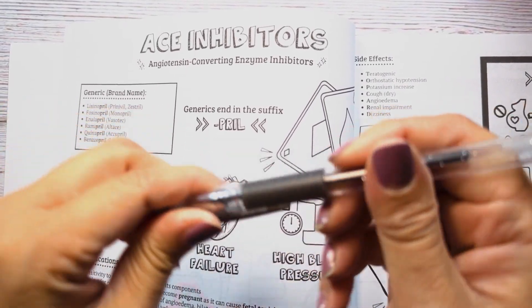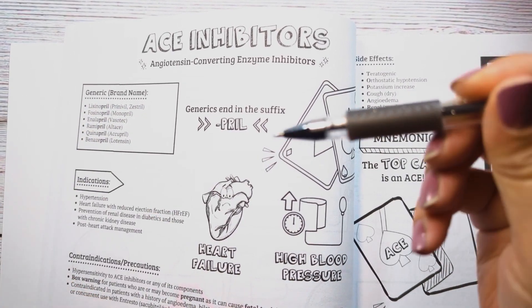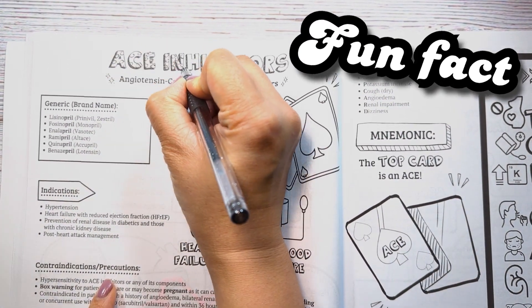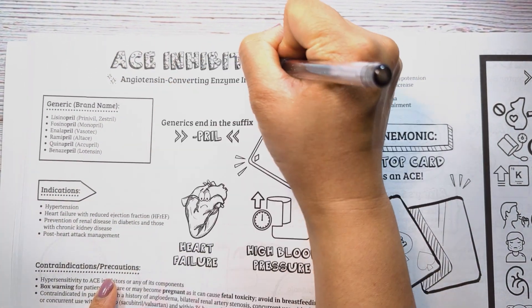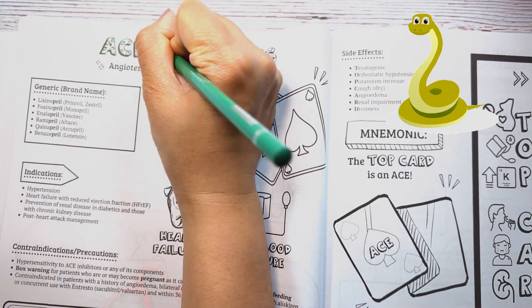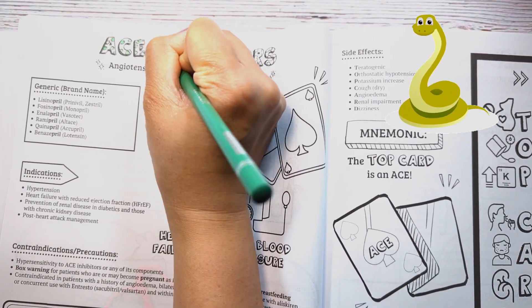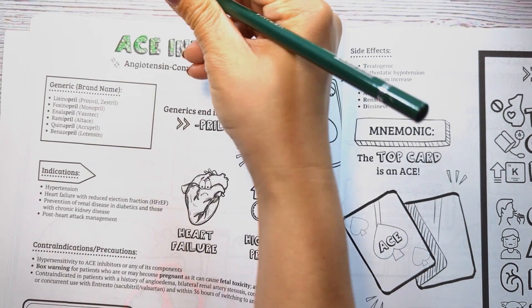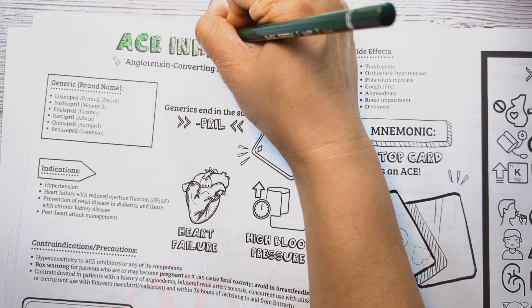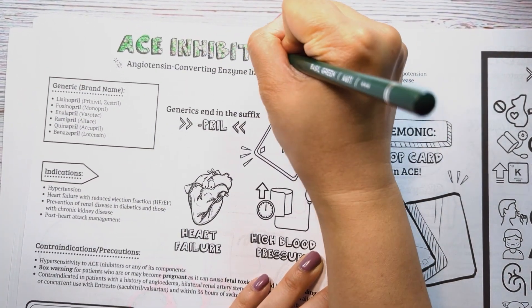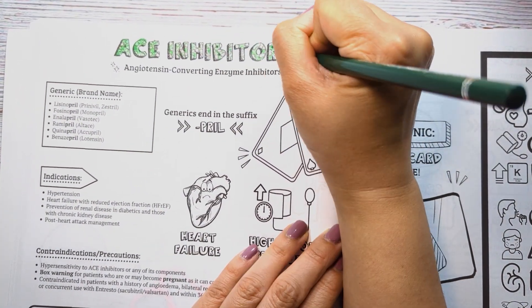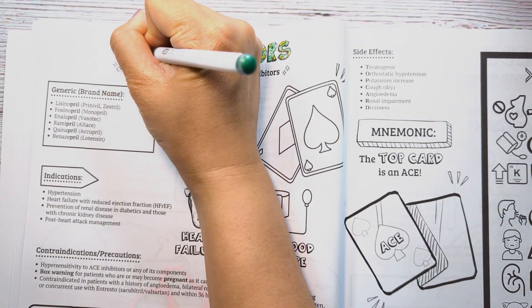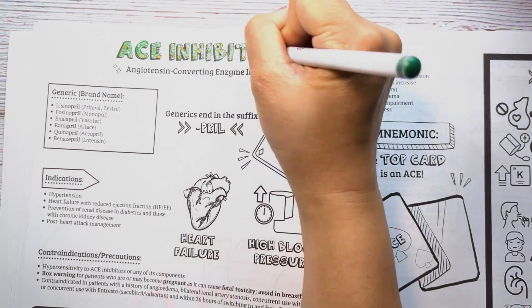ACE is short for angiotensin converting enzyme, but did you know that the active ingredient in the first ACE inhibitor, captopril, was originally derived from snake venom? Captopril was based on the venom of the poisonous Brazilian viper. I'm sure that made captopril captivating to study. Let's color in this title in a snake skin pattern in light of this fun fact.